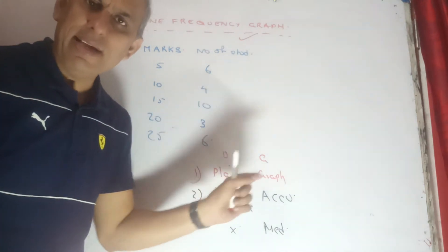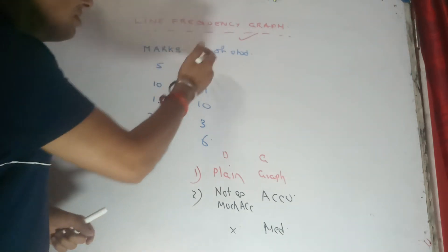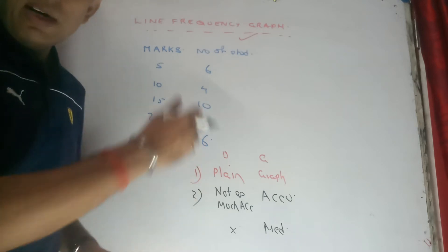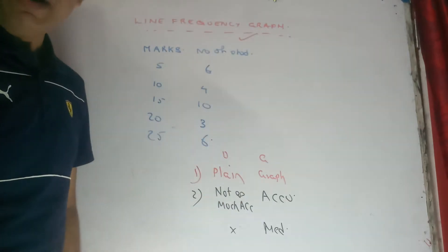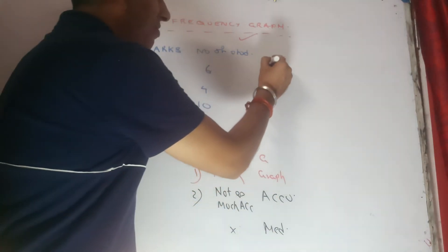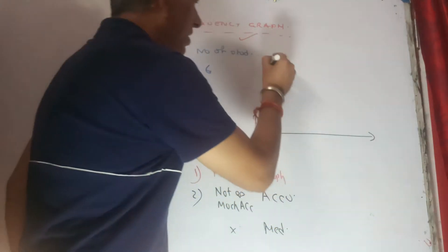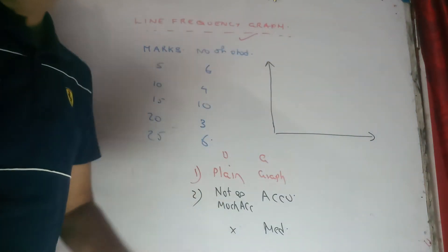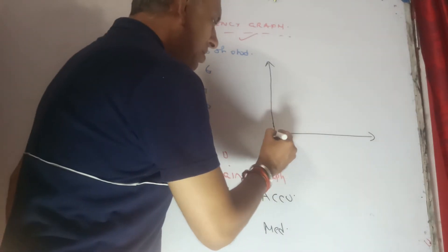Now, a frequency distribution like this one given to you, wherein it's an ungrouped frequency distribution, let's take a line frequency graph on X and Y axis in a graph paper. I am presenting it on the board as a plane, but generally graph paper is required for graphical presentation. Taking the scale as such...